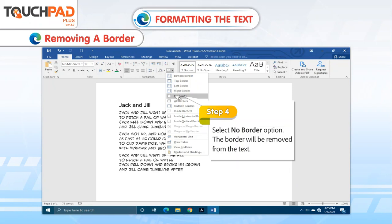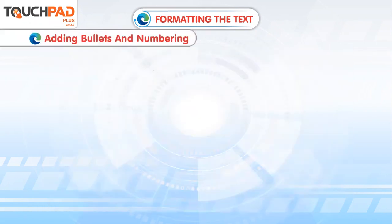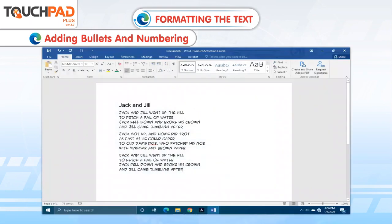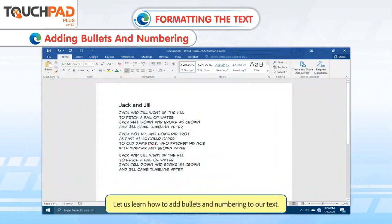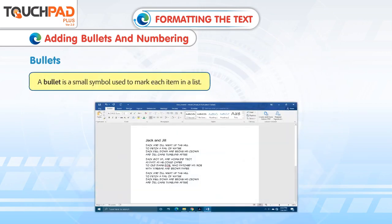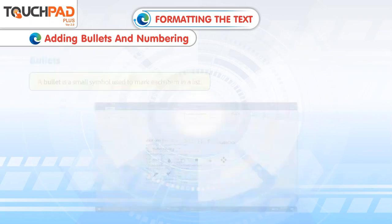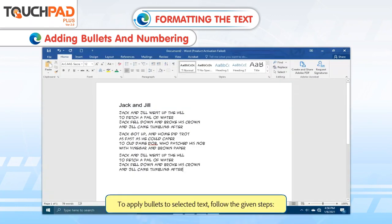The border will be removed from the text. Adding Bullets and Numbering. Let us learn how to add bullets and numbering to our text. Bullets. A bullet is a small symbol used to mark each item in a list. To apply bullets to selected text, follow the given steps.